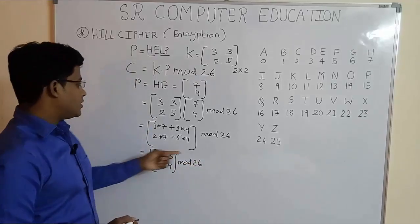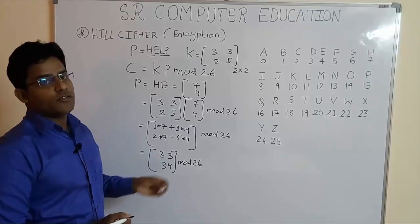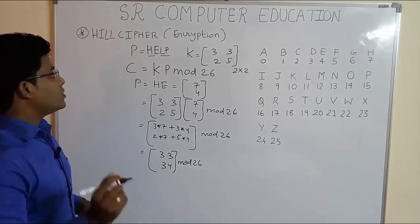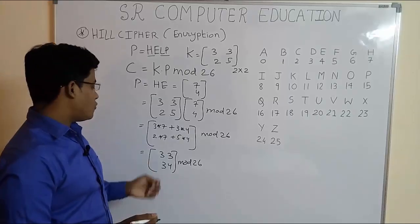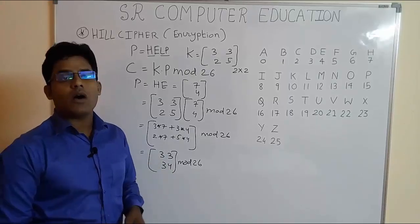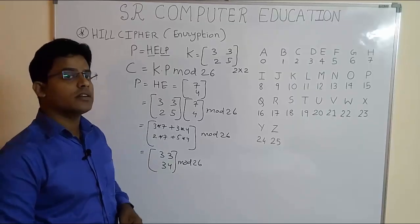Now we have to do 33 mod 26 and 34 mod 26. Now we have to remember one thing here. Most of these ones face problem here, how to find the mod operation, how to do the mod operation and find the result of the mod operation.